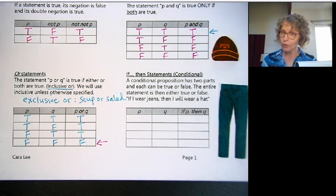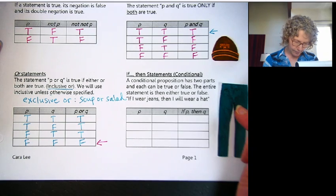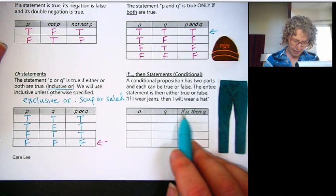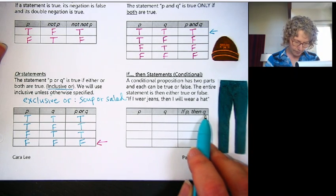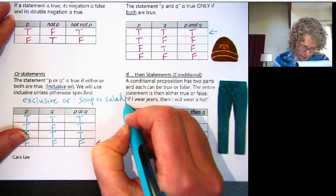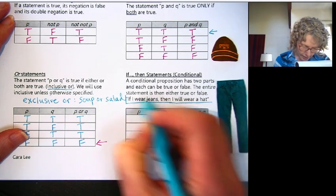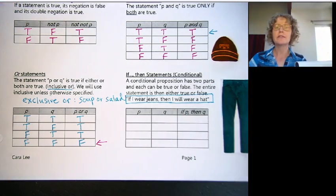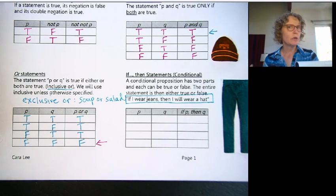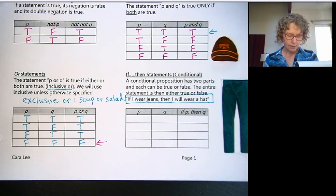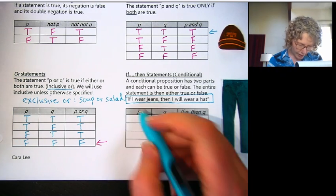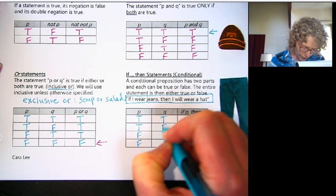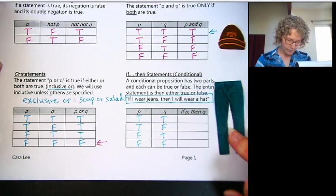One more to go, and that's the if-then or conditional statement. If-then is when you put two things together. We're going to look at if P then Q. So that statement would look like this: if I wear jeans, then I will wear a hat. So let's say Jamie said this to their friends: if I wear jeans tomorrow, then I'll wear a hat. Let's start with our true, true, false, false. True, false, true, false.